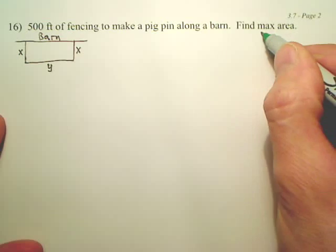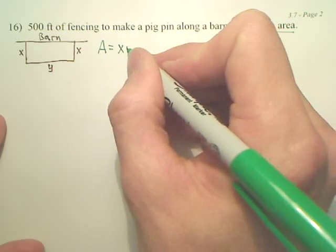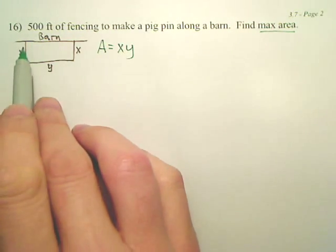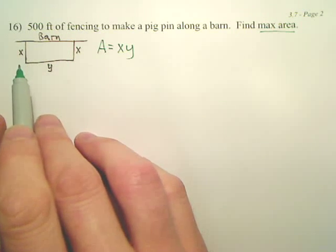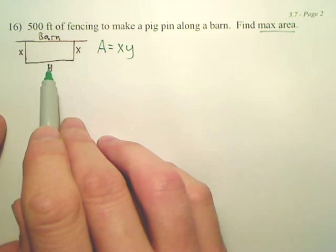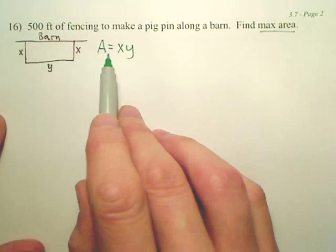So what we're trying to find, what we're trying to maximize is area. Area is going to be x times y. By the way, here's the barn. Here's a rectangular pen. This is x, this is y. Area would be x times y. You're maximizing this.